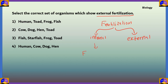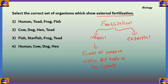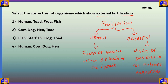Internal fertilization refers to the fusion of gametes within the body of the female, while external fertilization is the union of gametes in an external environment. So internal means the egg is fertilized inside the organism, while external means the egg is fertilized outside the organism.